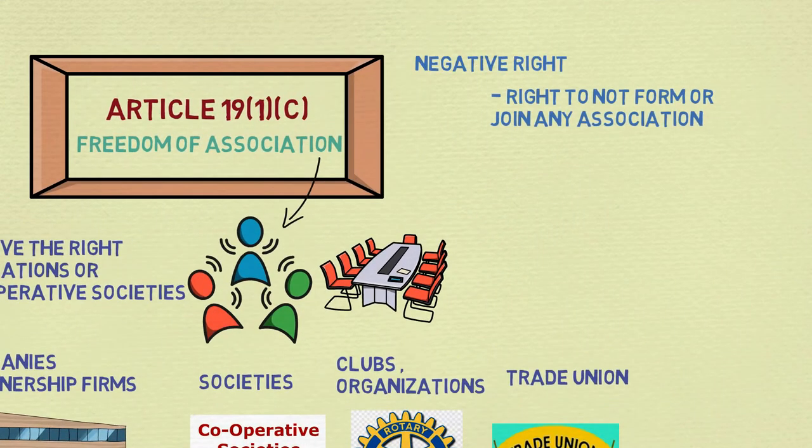This right also covers the negative right of not forming or joining an association or union. In short, no one can force you to join an association or a union. According to Article 19(4), there are three grounds for reasonable restrictions on this freedom: sovereignty and integrity of India, public order, and morality.